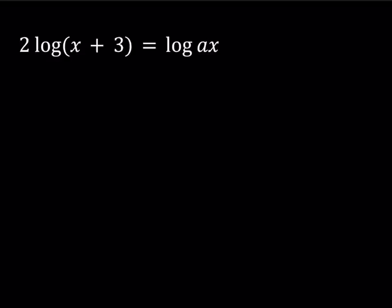Hello everyone. In this video we're going to be looking at a logarithmic equation. This problem was taken from a book called 'A Problem Book in Algebra' by Kretschmar — I'll share the link below. We have 2·log(x+3) = log(ax), and we're told this equation has only one root. We're going to find the values of a, which is a parameter.